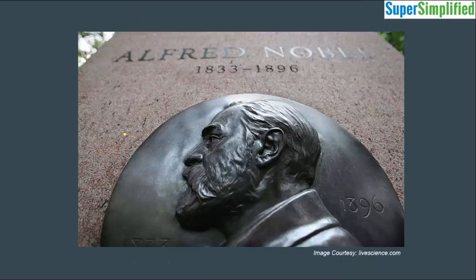Nobel Prize was established by Swedish inventor Alfred Nobel in 1895 and it was originally given away in five disciplines: Physics, Chemistry, Maths, Literature and Peace. One more category, Economics, was added in 1968 and we are discussing about this category.